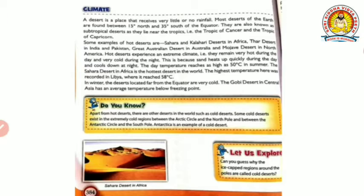These are some famous desert names you have to remember. Hot deserts experience an extreme climate - they may remain very hot during the day and very cold during the night. During the day there is extreme heat, but at night it becomes very cold. This is because sand heats up quickly during the day and cools down at night. During the day, sunlight directly falls on the equator region, so that area has more heat and the sand becomes hot, but as night comes it cools down.